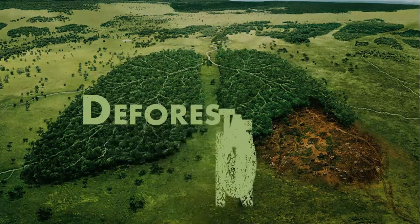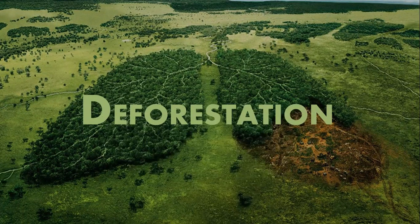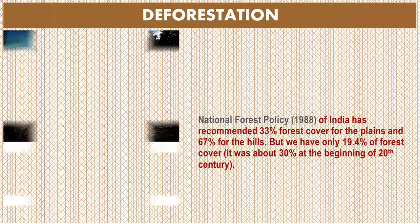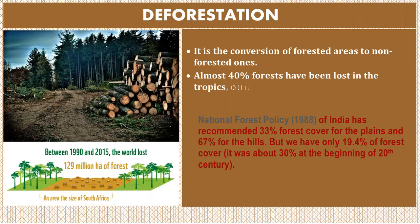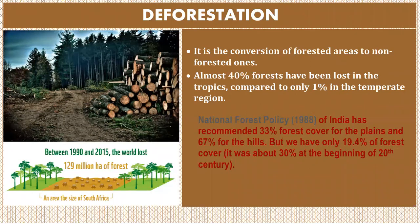Moving to the last major environmental issue: deforestation. Deforestation is the conversion of forested areas to non-forested areas. Almost 40% of forests have been lost in the tropics compared to only 1% in temperate regions. India's National Forest Policy of 1988 recommended 33% forest cover for plains and 67% for hills, but we currently have only 19.4% forest cover.